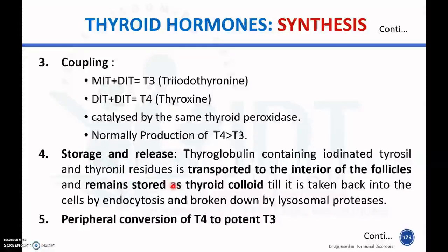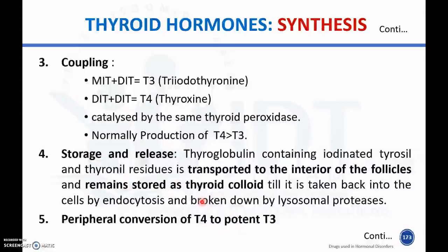The fourth step is storage and release. Thyroglobulin containing iodinated thyrosyl and thyronine residues is transported to the interior of the follicles and remains stored as thyroid colloid until it is taken into the cells by endocytosis and broken down by lysosomal proteases.